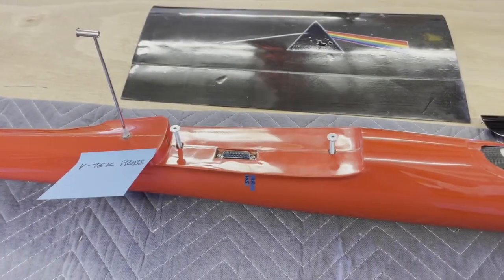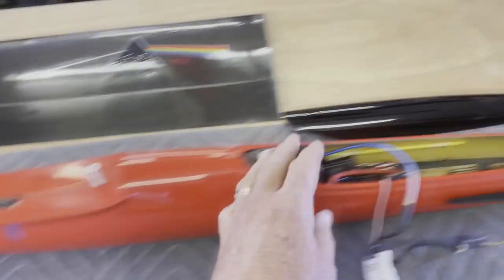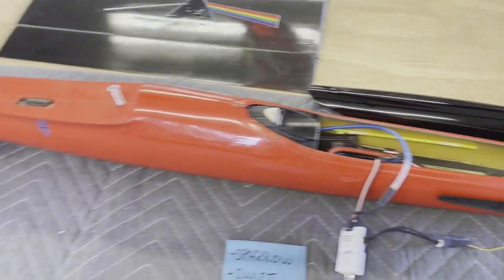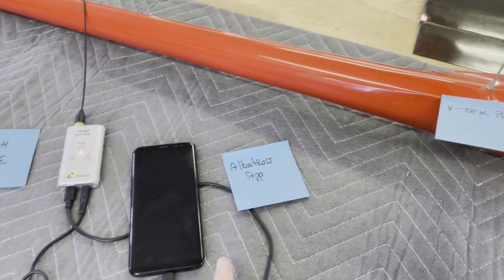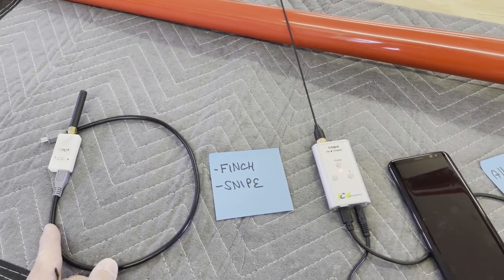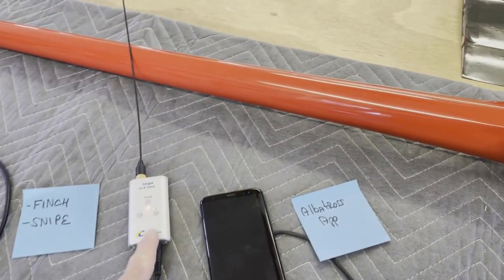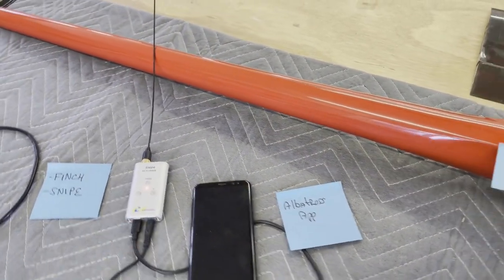So anyway, so that's all you need. And the fire sale that he's having, you get a VTEK probe, you get all of the airborne equipment, you get the subscription to the Albatross app, and you get a Finch which works just great. And then of course somewhere you could upgrade or purchase the snipe that gives you the stereo steering.